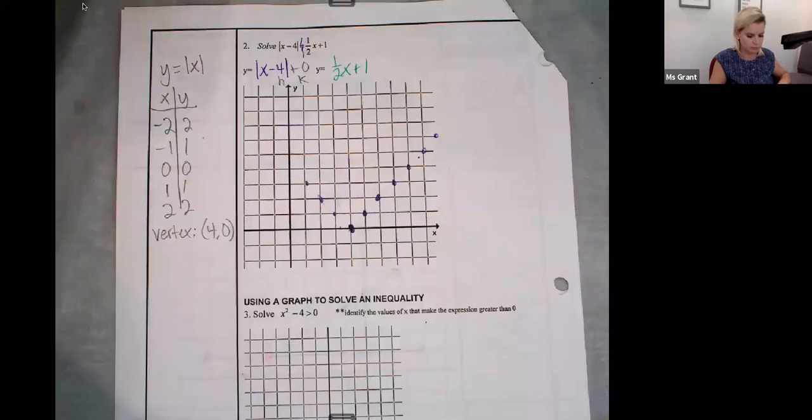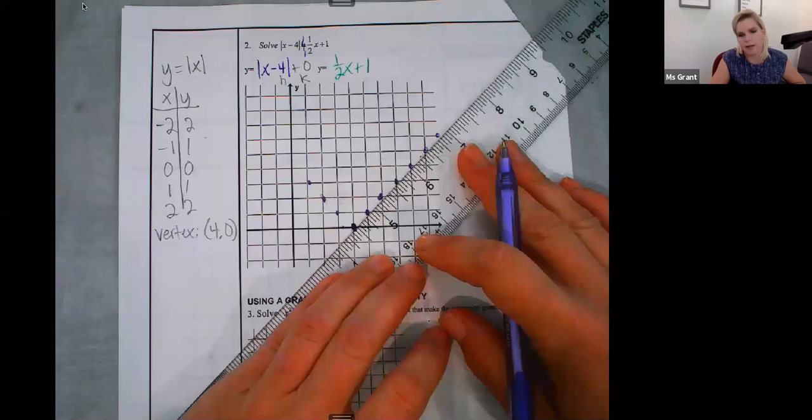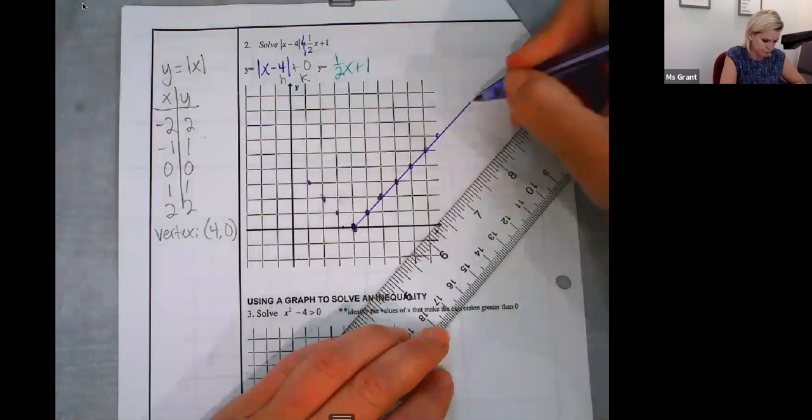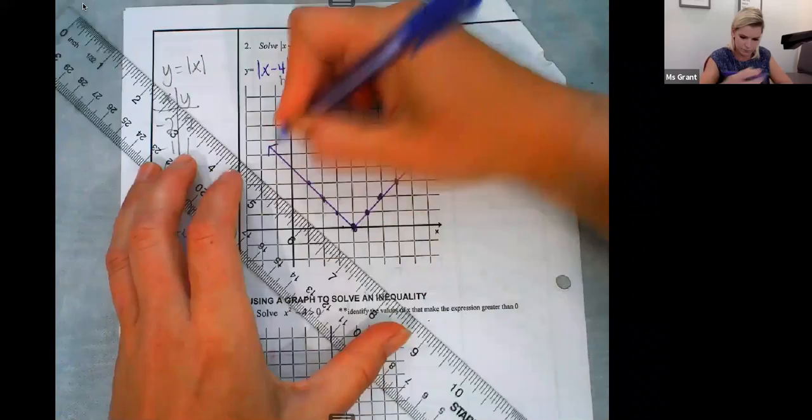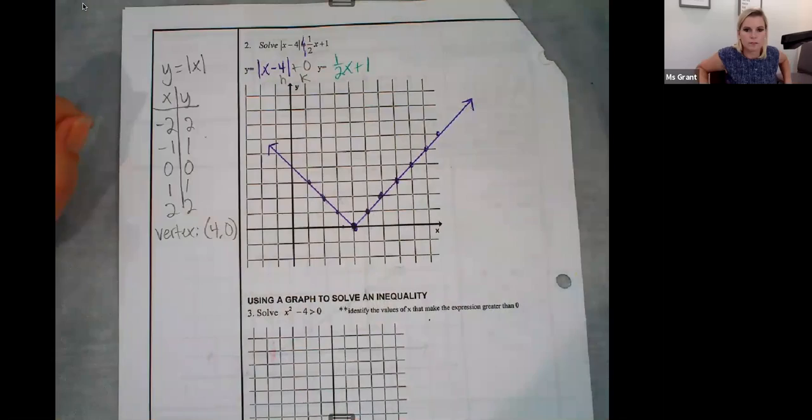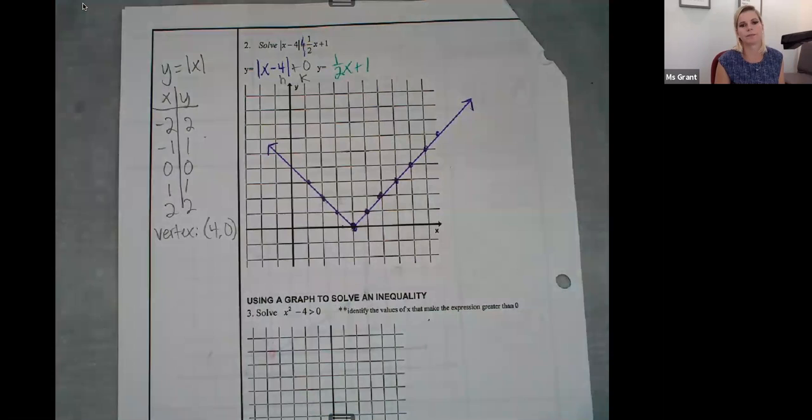So I'm going to go ahead and fill in those dots. And I actually know, because I know the answer, that I need to extend my uphill portion. You know how this part of my absolute value right here, that I'm drawing, this has a slope of positive 1 because it's uphill. This has a slope of negative 1.